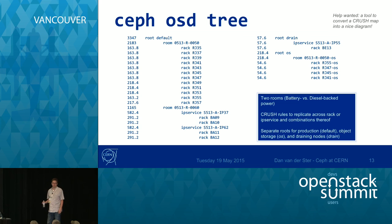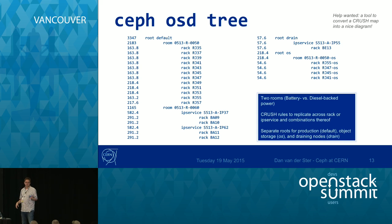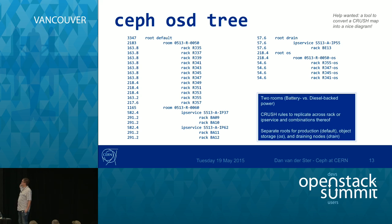This is our Ceph OSD tree as of yesterday. We have basically three roots. We have the default root where all the main data goes, with two rooms: our main UPS battery-backed room, and a diesel-backed room for what we call critical projects. We've learned more about CRUSH and now replicate across IP subnets, which is basically across routers, to add additional reliability. We also have a separate root for object storage use cases, and a draining root to move servers out of service.